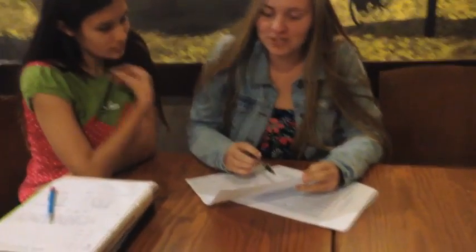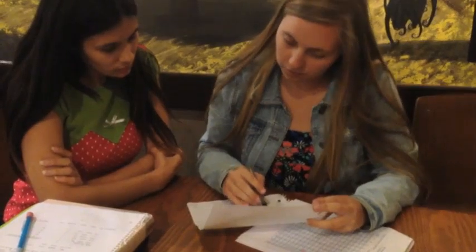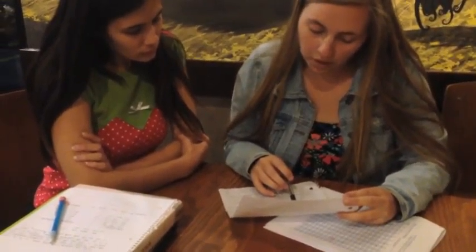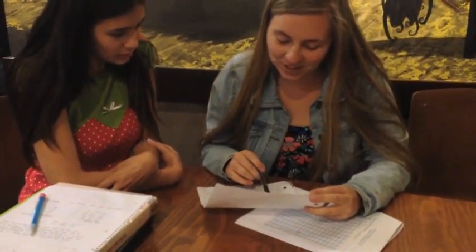Okay, so this is problem number 29 from review number 3. So it says use the traditional method to test the given hypothesis. Assume that the population is normally distributed and the sample has been randomly selected. In one town, monthly incomes for men with college degrees are found to have a standard deviation of $650. Use the significance level of 0.01 to test the claim that for men without college degrees in that town, incomes have a higher standard deviation. So for this problem, we're going to do a standard deviation or variance of one population for the test statistic.